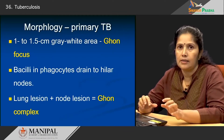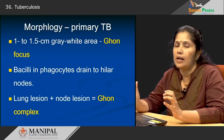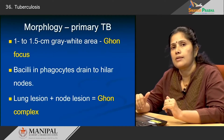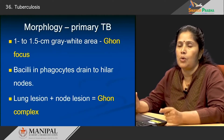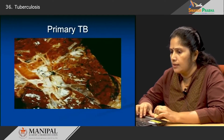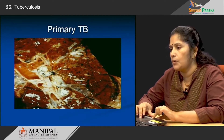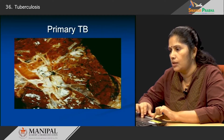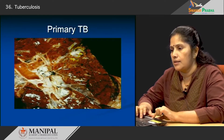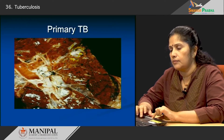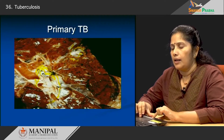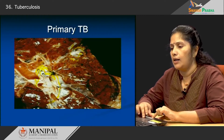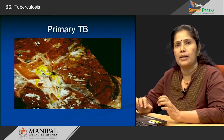The Ghon focus is the lesion in the lung, and when accompanied by enlargement of the hilar lymph nodes, the combination is known as the Ghon complex — both are associated with primary tuberculosis. If you look at this picture, you can see a small subpleural lesion accompanied by the hilar lymph node involvement. This combination — a small subpleural lesion in the lung parenchyma accompanied by a large hilar lesion — is the Ghon complex.